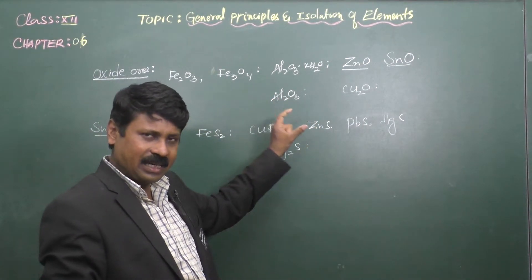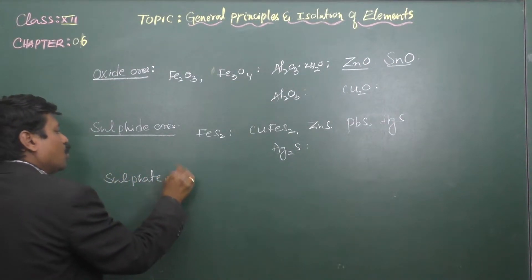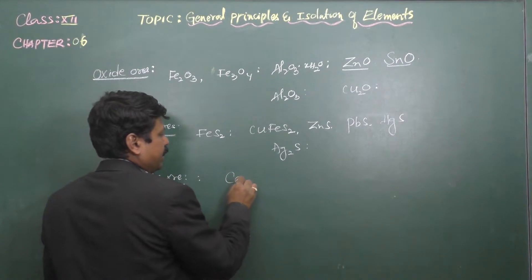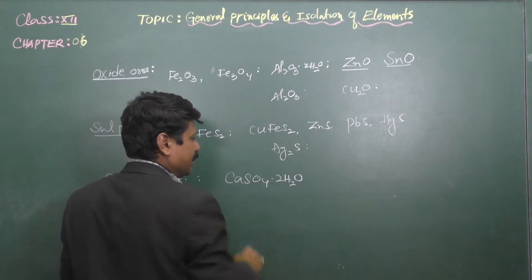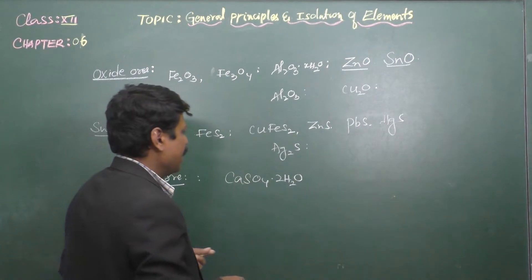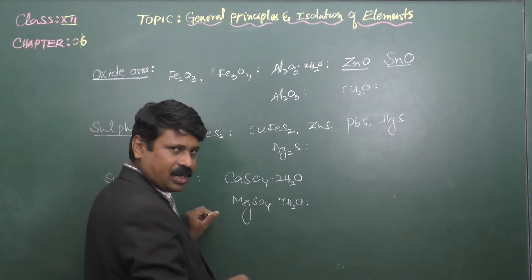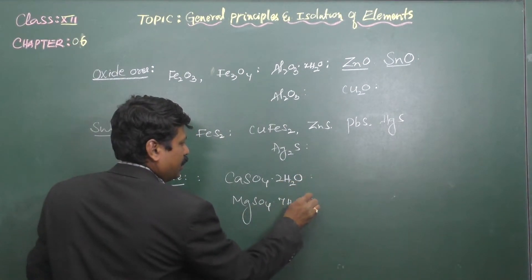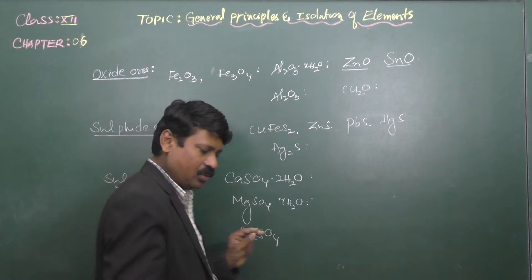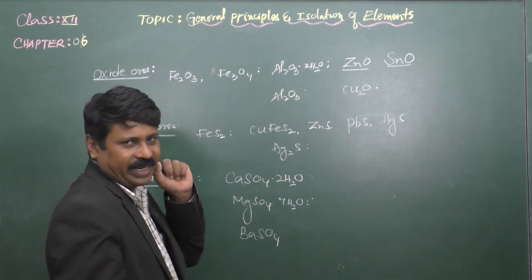Next are sulfate ores. Examples include: CaSO₄·2H₂O (gypsum), CaSO₄ (anhydrite), MgSO₄·7H₂O (Epsom salt), and BaSO₄ (baryte). Sodium sulfate is also found as Glauber's salt. These are the most important sulfate forms of metals.